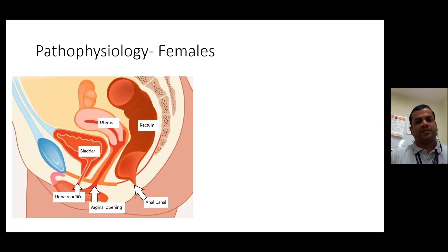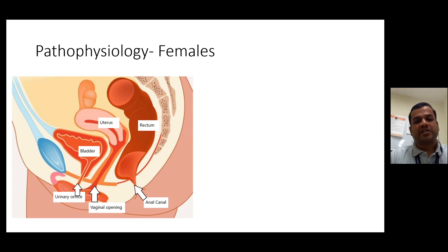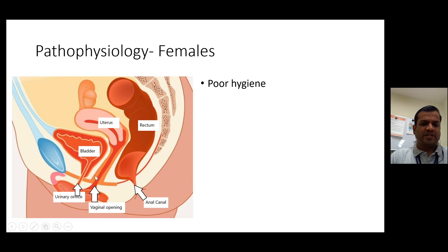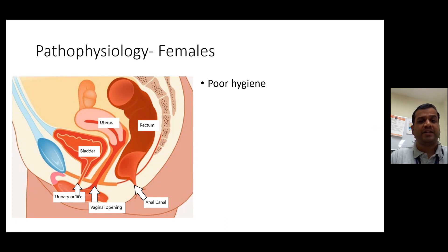Now let's look at pathophysiology — let's start with females because unfortunately females tend to suffer from UTIs more frequently. From a young age right up to old age, the percentage remains fairly constant. The biggest reason is poor hygiene. If this area remains dirty, there's a chance that dirt or anything can collect there, and while passing urine it can go up — that's when bladder infection or UTI can happen. Poor hygiene is the number one reason females are more predisposed to UTI.